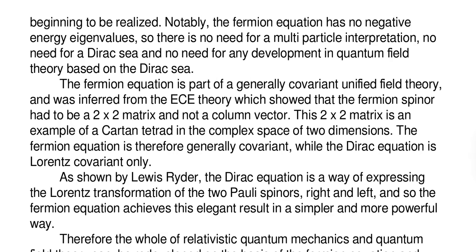The Fermion equation is part of a generally covariant unified field theory and was inferred from the ECE theory which showed that the Fermion spinor had to be a 2x2 matrix and not a column vector. This 2x2 matrix is an example of a Cartan tetrad in a complex space of two dimensions. The Fermion equation is therefore generally covariant, while the Dirac equation is Lorentz covariant only.